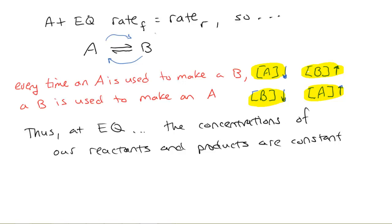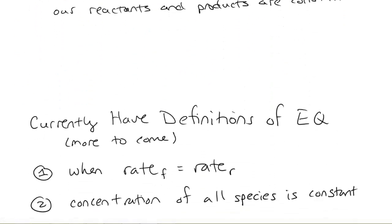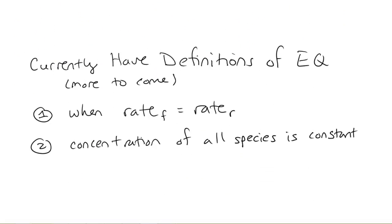So, this is called a dynamic equilibrium. The equilibrium, the reactions keep going. However, the concentrations stay constant because every time an A is used, a B is created, and every time a B is used, an A is created, and those two processes are happening simultaneously. So, we now have two definitions of equilibrium at our disposal, and there's more to come, and we want to know all these and keep track of them.